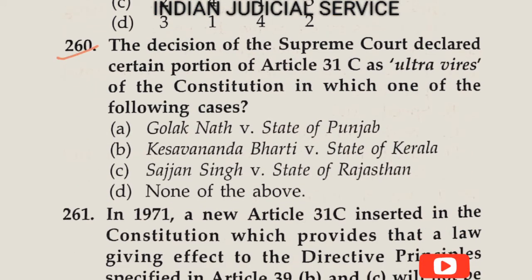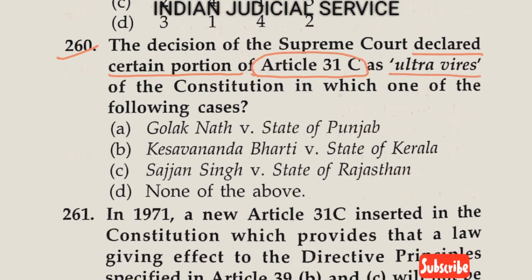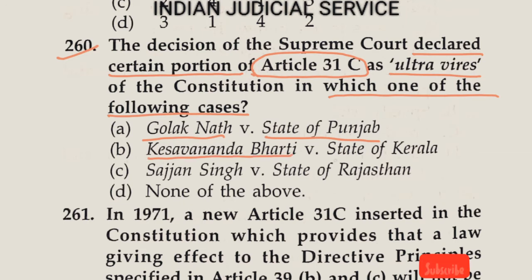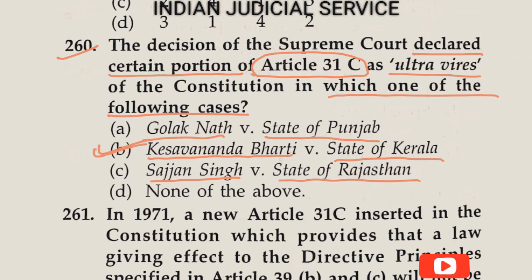Question number 260: The Supreme Court declared a certain portion of Article 31C ultra vires of the constitution in which case? Option A: Golaknath versus State of Punjab. Option B: Kesavananda Bharti versus State of Kerala. Option C: Sajjan Singh versus State of Rajasthan. Option D: None of the above. The answer is Option B — Kesavananda Bharti versus State of Kerala, AIR 1973.